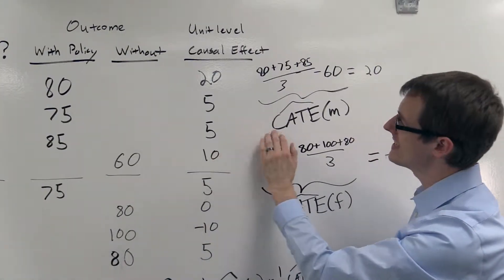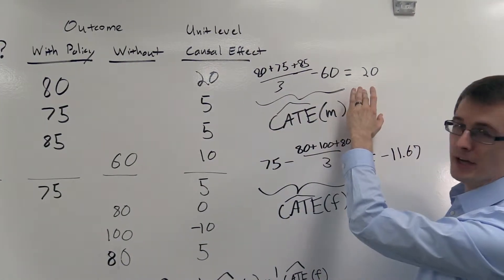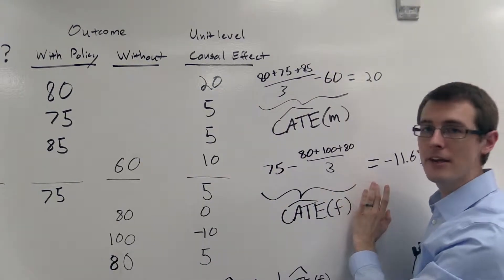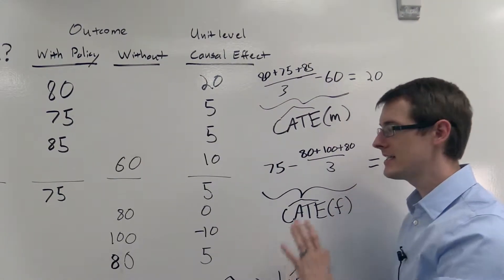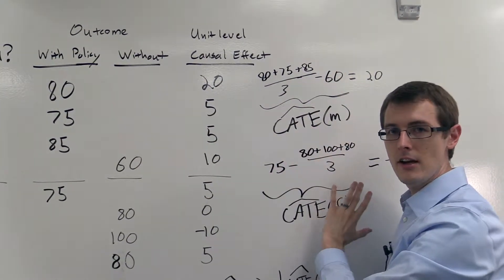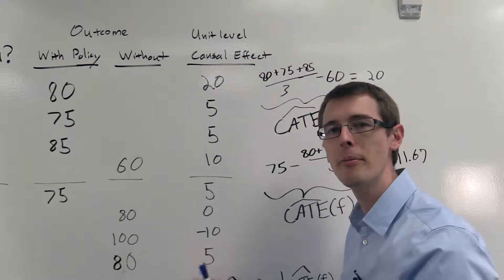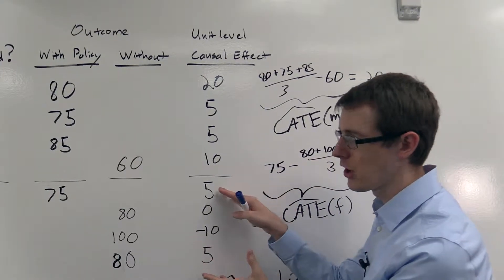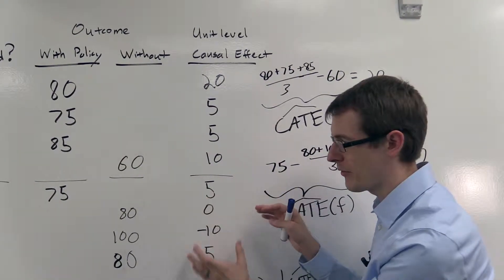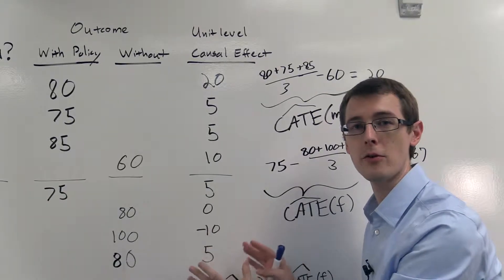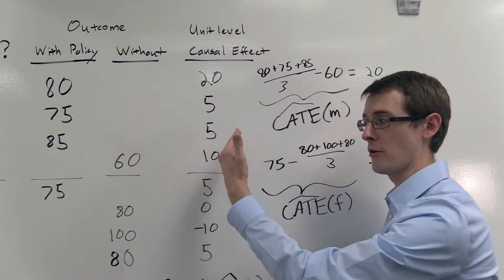Now, those numbers aren't going to exactly equal this number here for men and not this number here for women, because these are just estimates. But if we had more and more people in our data set, if we added more men and more women, then this number would slowly get closer to the average of the numbers in this column for females, and likewise for men.